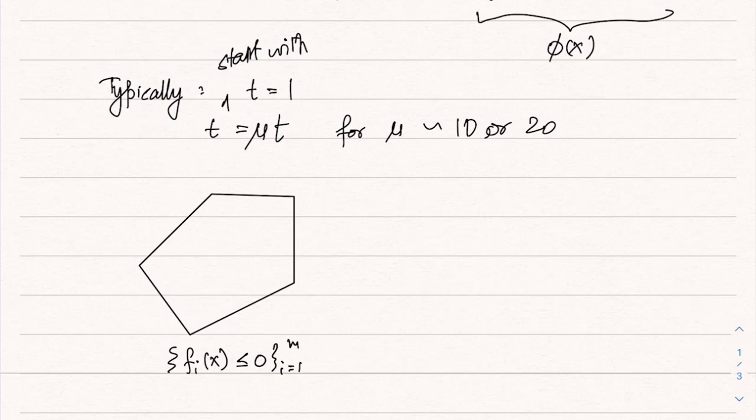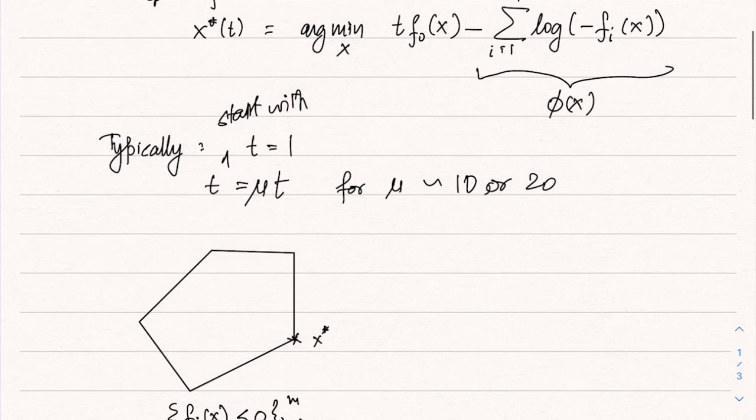How would the iterations proceed? Initially t is very small, so in the objective function, the objective function is not being given much weightage and all we want to do is be inside the constraint region. We start with a feasible x. If we minimize minus log minus fi of x, we would end up at a point which is as far as possible from the constraint region boundary, so we would actually end up here. The initial objective contours will be something like this—they would be circular, and we would end up at the center.